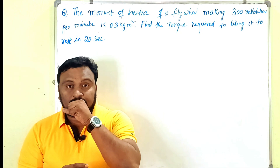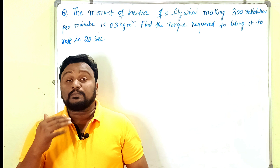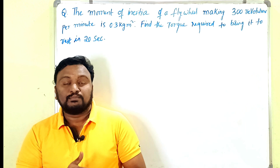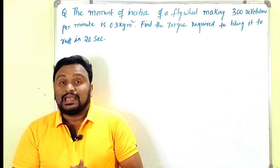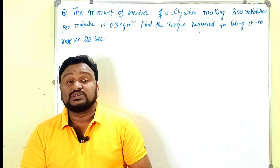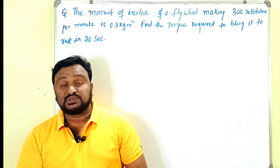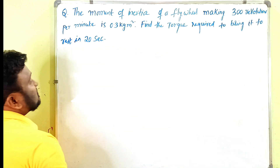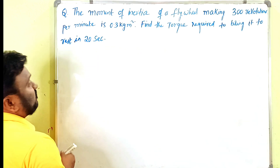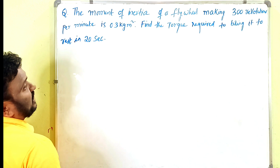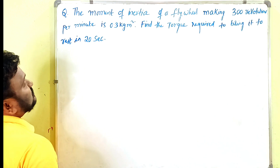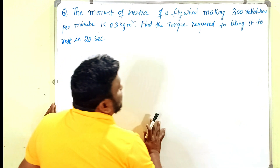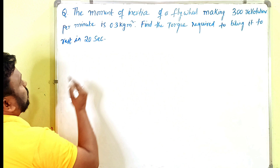This problem is from the chapter on System of Particles and Rotational Motion. It is an important problem for IPE examinations and also for competitive exams, so watch the video till the end without skipping. The problem is: the moment of inertia of a flywheel making 300 revolutions per minute is 0.3 kg·m². Find the torque required to bring it to rest in 20 seconds.